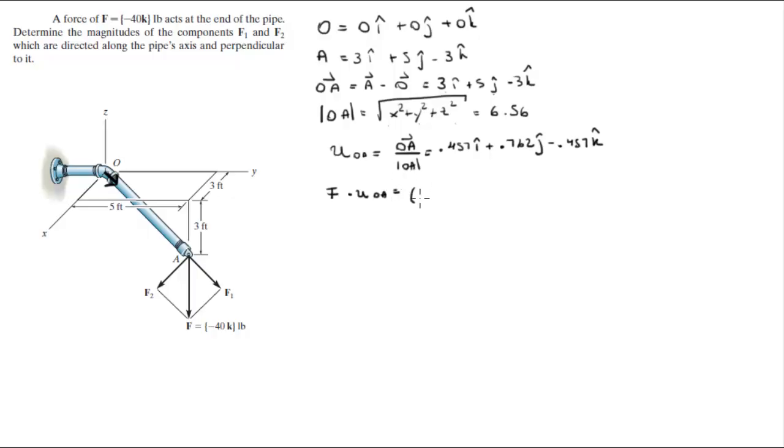The force is 0 in the i plus 0 in the j minus 40 in the k as given by the problem. Dot the unit vector which is 0.457i plus 0.762j minus 0.457k. 0 times 0 is 0, 0 times 0.762 is 0 and negative 40 times negative 0.457 is positive 18.28.